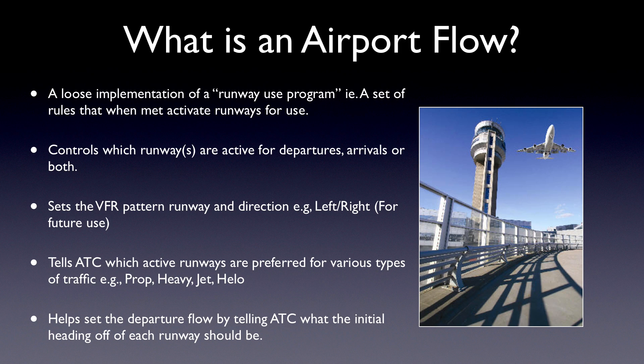So for example, you could say this specific runway is active now just for departures, while that runway is active just for arrivals, or perhaps they're both active for both types of operations. In addition to determining which runways are active, an airport flow can also tell ATC which runway you want to use for the VFR and pattern runway for the current flow, and whether or not it has left or right traffic.